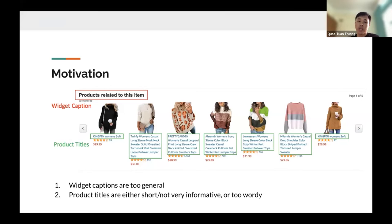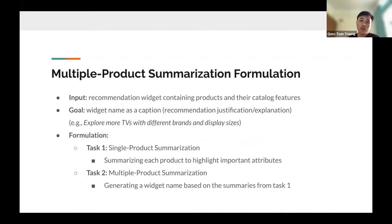The second problem is that the product titles displayed in this widget are sometimes either very short or very long — too wordy. We would like to standardize them, which would also help generate a better caption. So we formulate the problem we call Multiple Product Summarization.